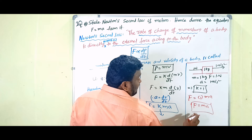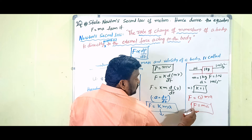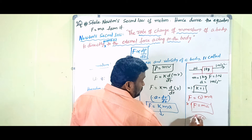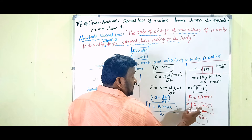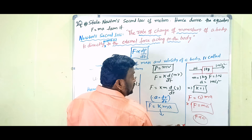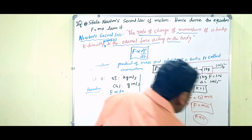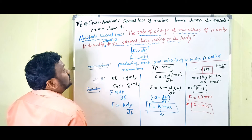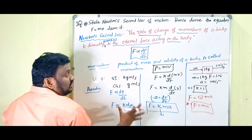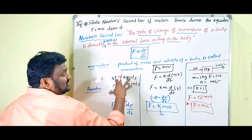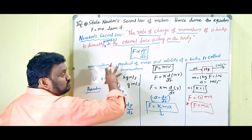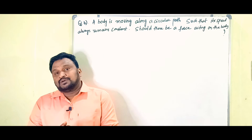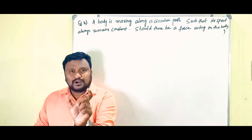So F equals ma is called Newton's second law equation. F is proportional to a — when we apply force on a body, the body's acceleration will change. This is the first part of the long answer. While you are watching the video, you must prepare notes — it will be helpful to you. Up to now we have discussed the first part of the long answer question. Now, the second part.